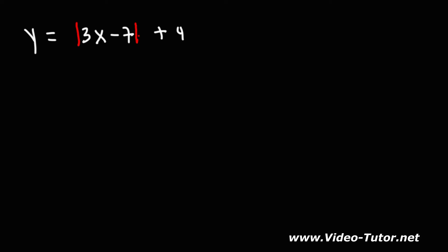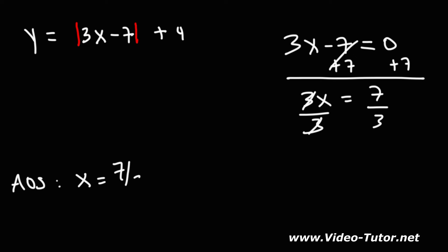So consider this particular absolute value function. Find the vertex and the axis of symmetry. So what we need to do is set the inside part of the absolute value function equal to 0. So first, I'm going to add 7 to both sides. I'm going to get 3x equal to 7. And then I'm going to divide both sides by 3. So for the axis of symmetry, x is just going to be 7 over 3.